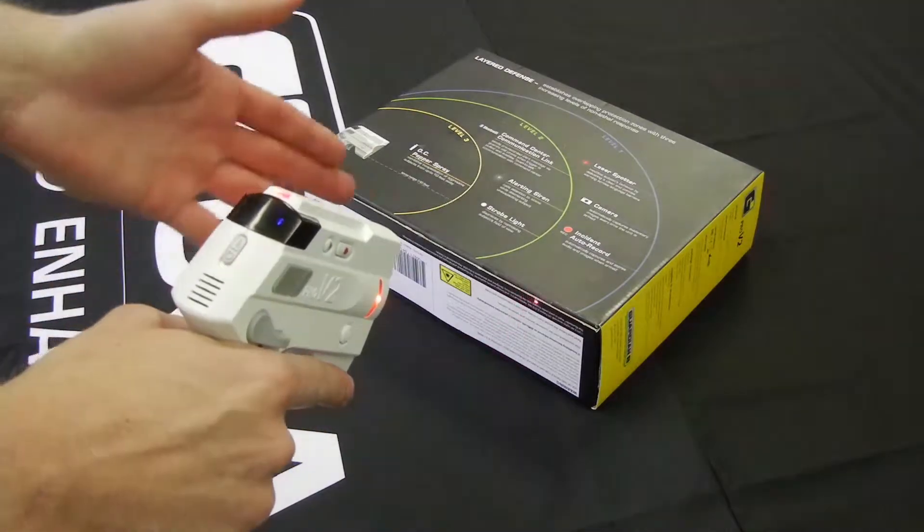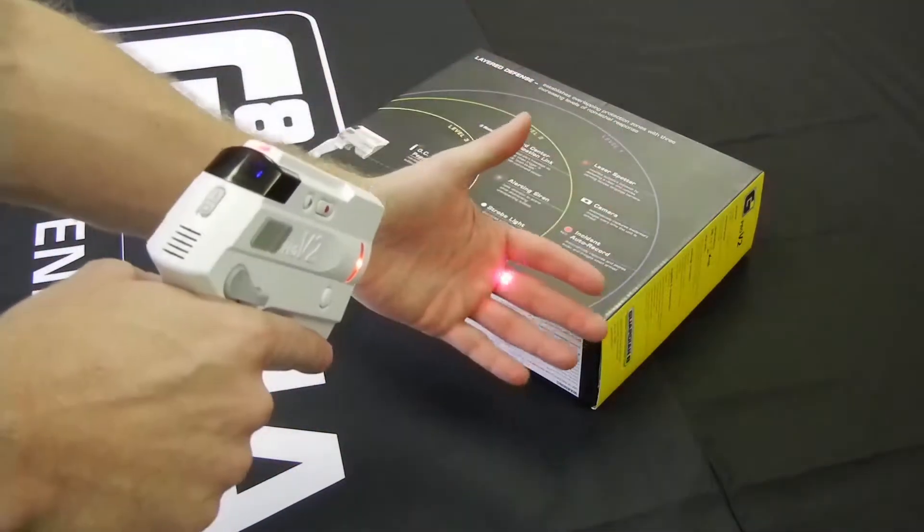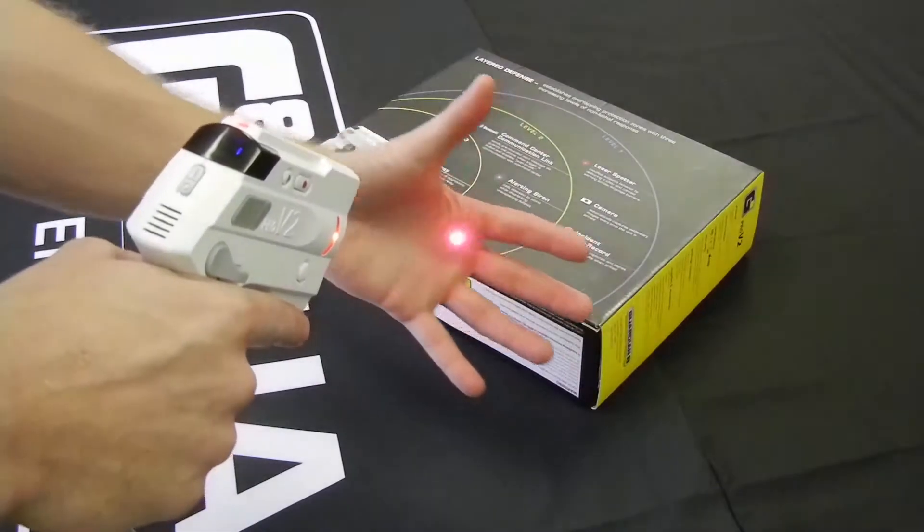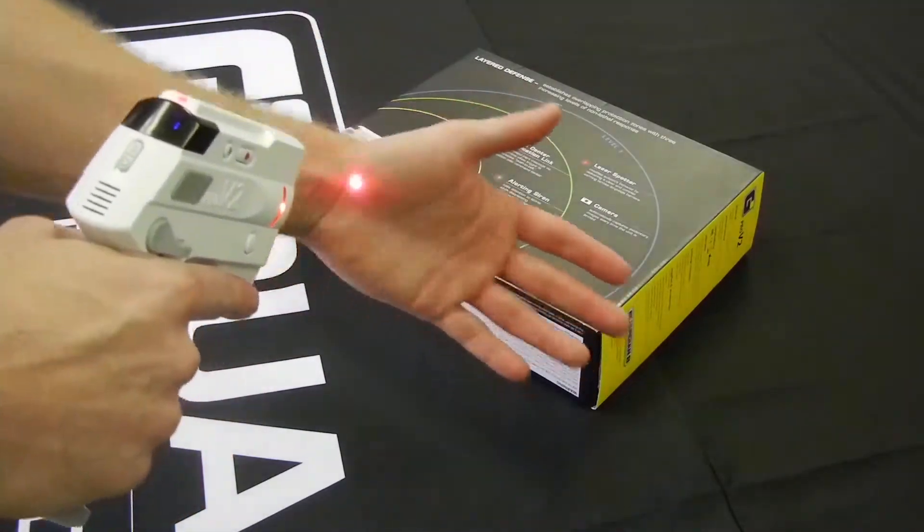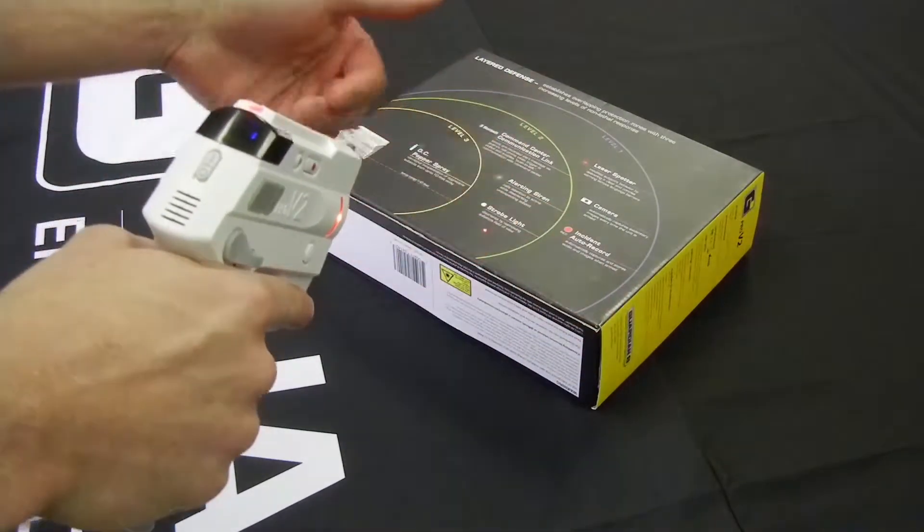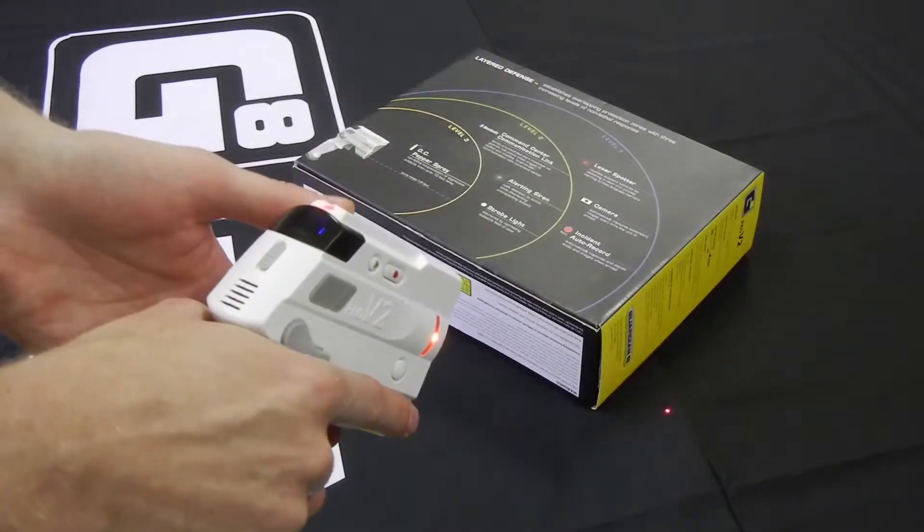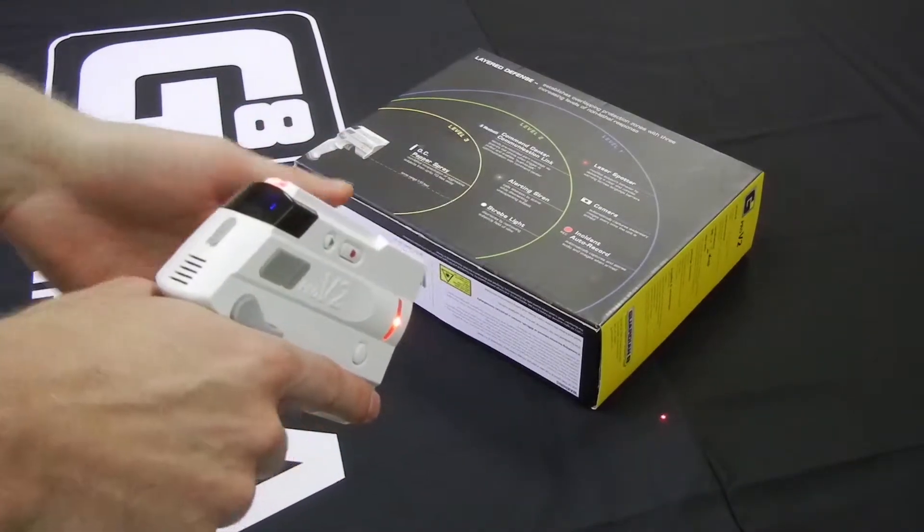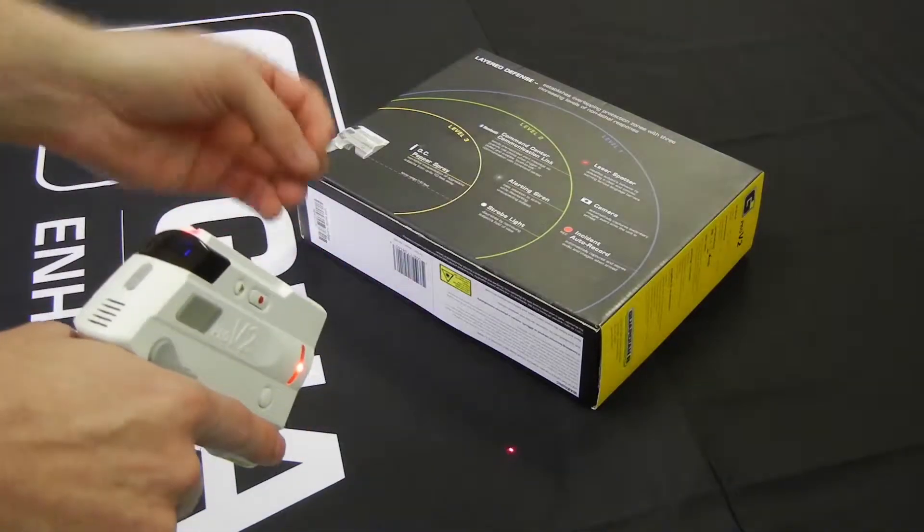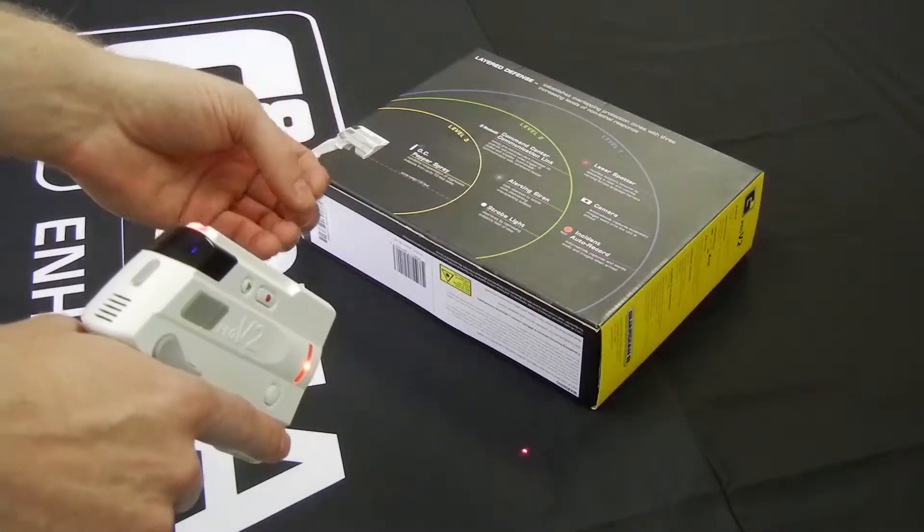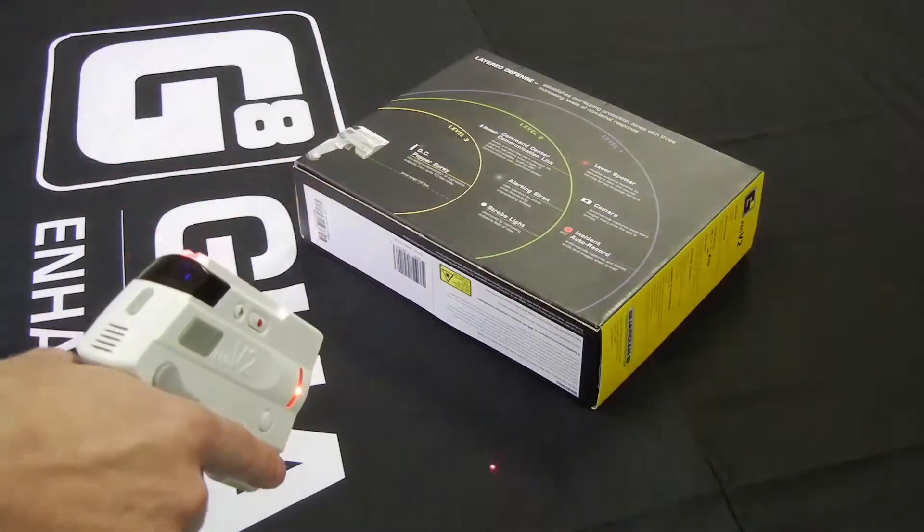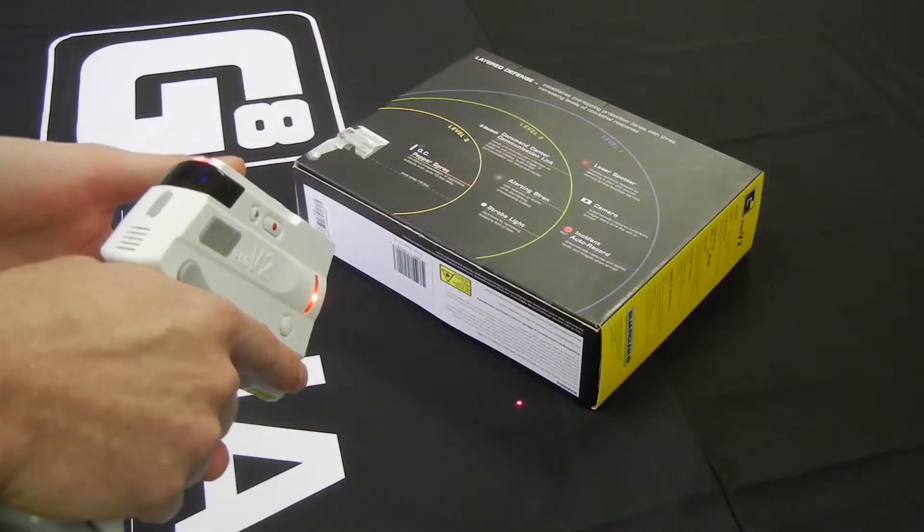And what it's doing right now is it's capturing photos of anything that's right out here in front of the device. About a 20 degree field of view. And it's also capturing everything that I'm saying right now. This is a level one activation and we do not recommend that you put the laser pointer in someone's eyes for a continuous amount of time. You do not point it at an aircraft. You do not point it at a law enforcement officer.